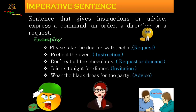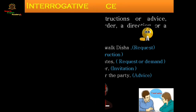'Wear the black dress for the party' — this can be advice; someone is suggesting you wear the black dress to the party because it will look good on you. So all of these sentences are imperative sentences. Now let's move on to interrogative sentences.